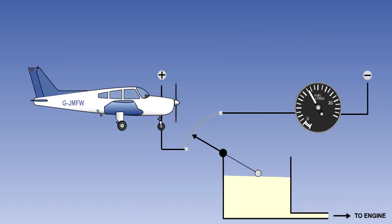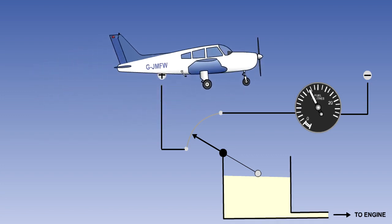This system is normally restricted to light aircraft. It has two major drawbacks. Firstly, it is subject to maneuvering error. That is to say, as the aircraft's attitude changes, the indicated fuel quantity will change.